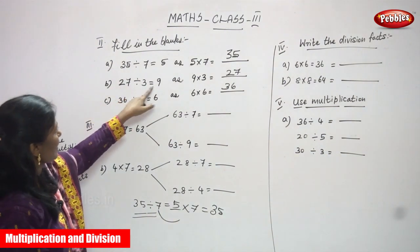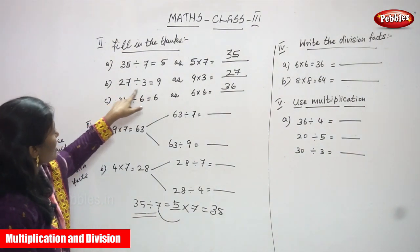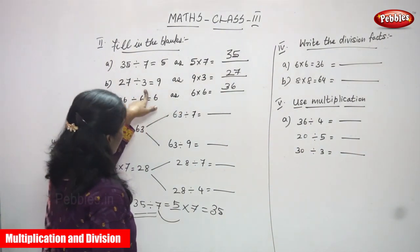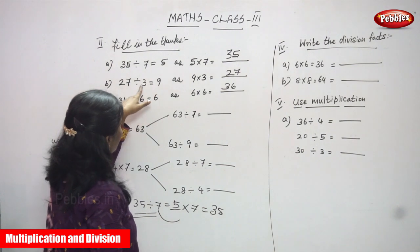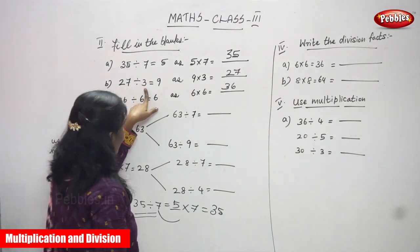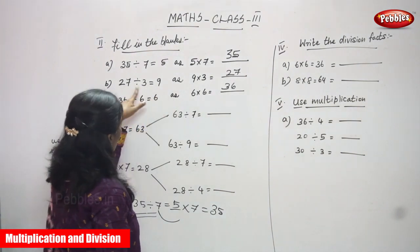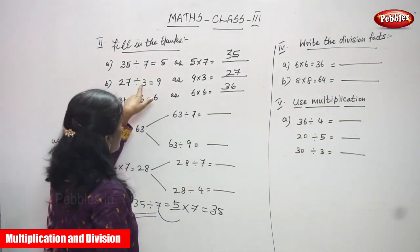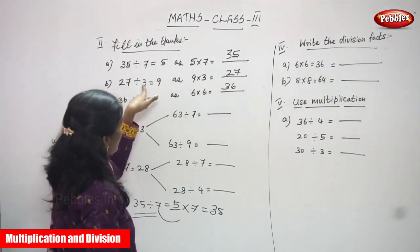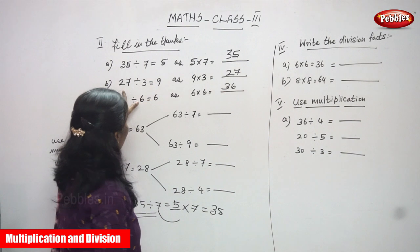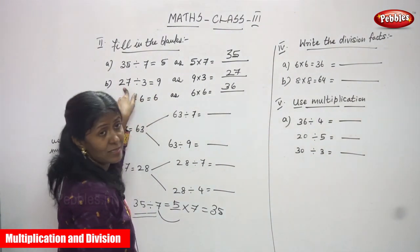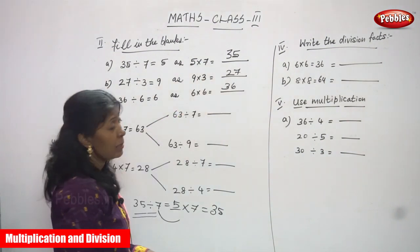27 divided by 3: you can get 9. So 9 into 3 — this 3 is in the division place. It goes to the opposite direction and becomes multiplication. So 9 into 3, you can get 27 clearly as written. Just write 27 in the blank.